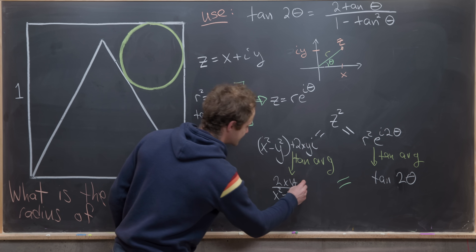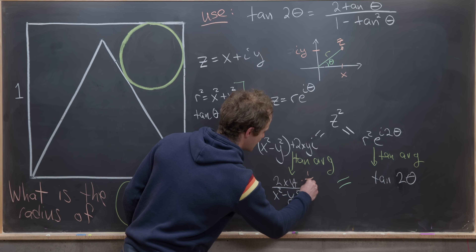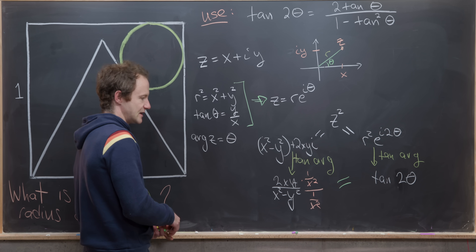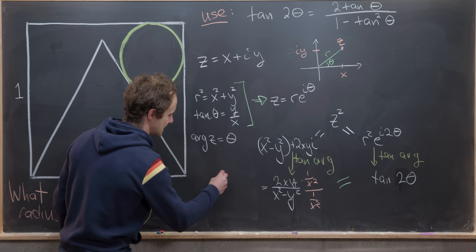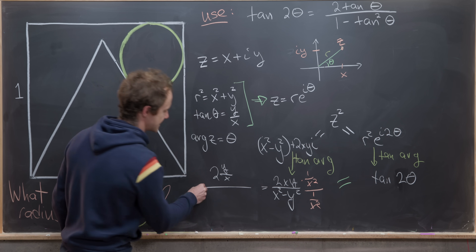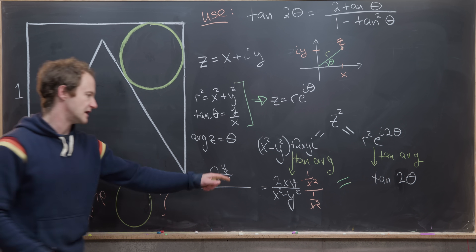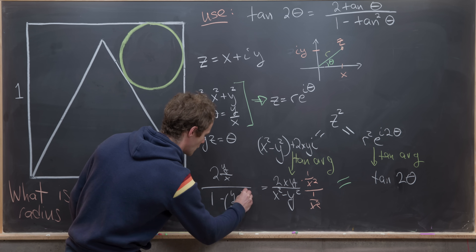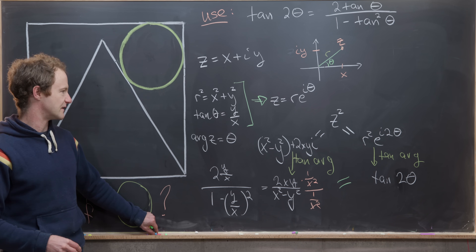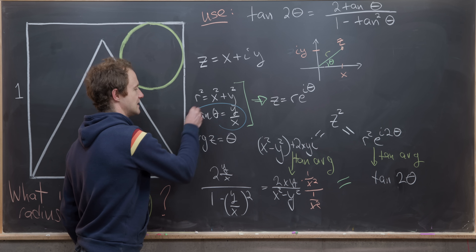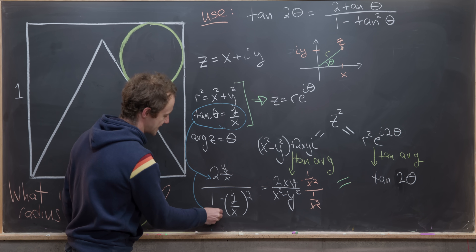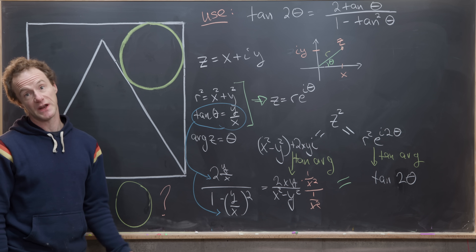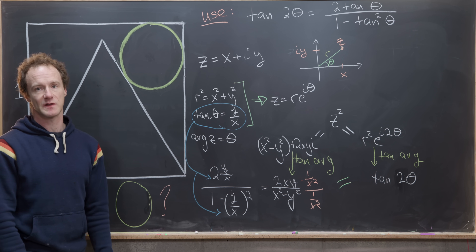To finish the derivation we multiply numerator and denominator by 1/x². The numerator becomes 2·(y/x), and the denominator becomes 1 − (y/x)². Substituting tan(θ) for y/x gives us the double angle formula: tan(2θ) = 2·tan(θ) / (1 − tan²(θ)).